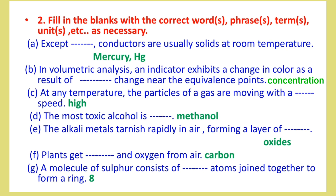F: Plants get carbon dioxide and oxygen from air. G: A molecule of sulfur consists of eight atoms joined together to form a ring.